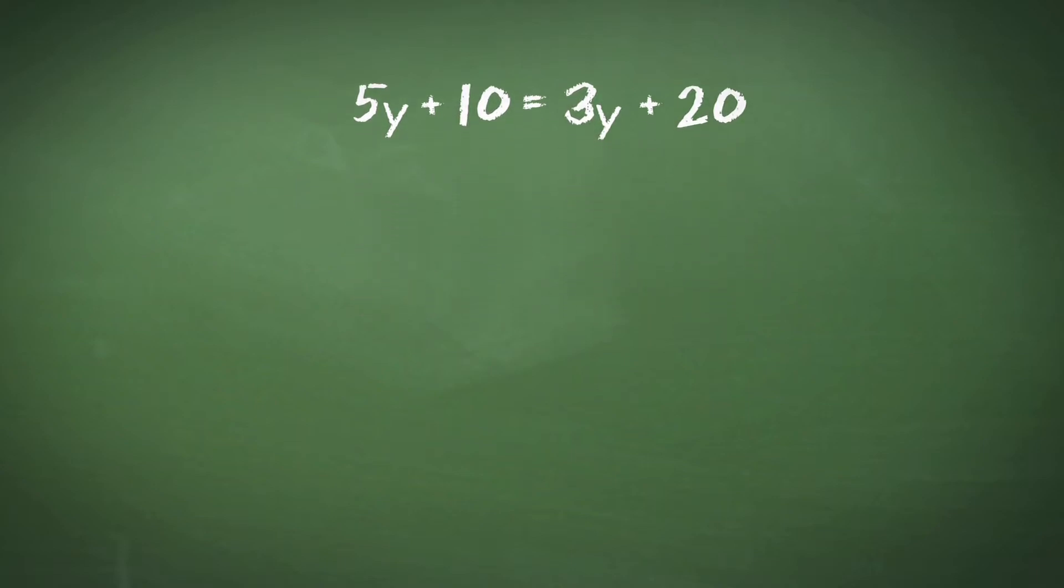5y minus 3y plus 10 equals 3y minus 3y plus 20. This will give us 5y minus 3y plus 10 on the left hand side, which is the same as 2y plus 10, and 3y minus 3y plus 20 on the right hand side, which is the same as 0 plus 20, or just 20.